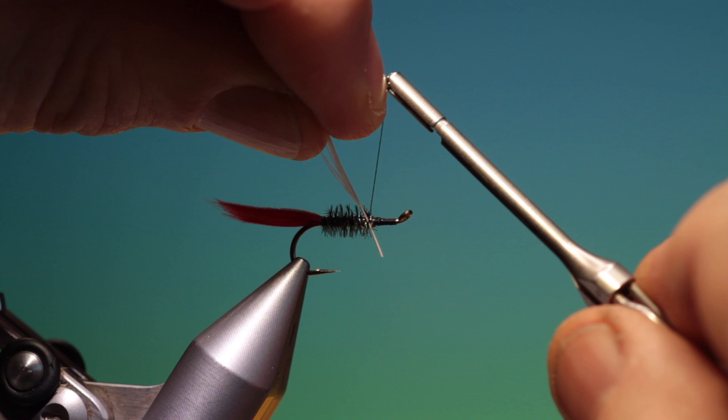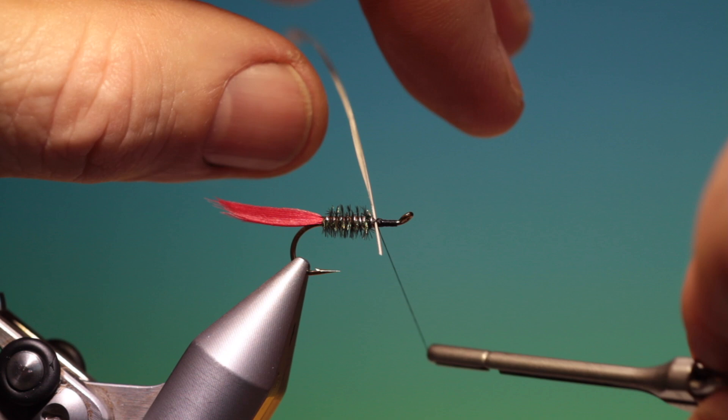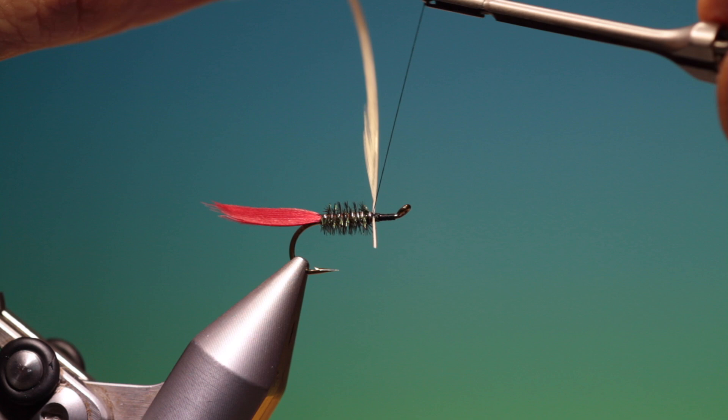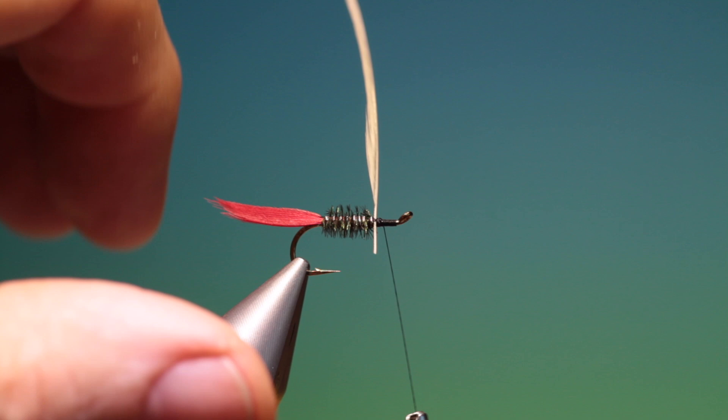And we tie that in with a cross, and then lock it down with a turn behind and a turn in front. And then we can just trim off that.